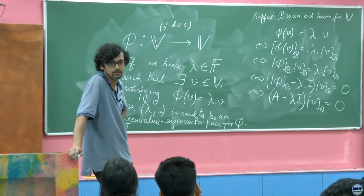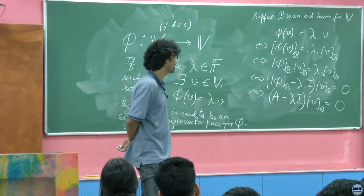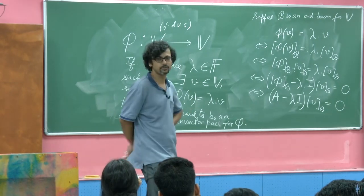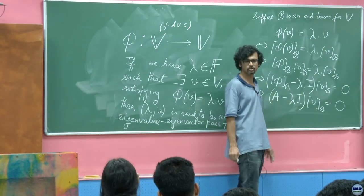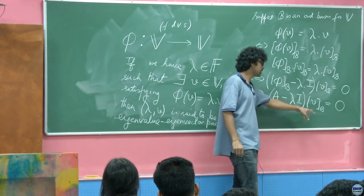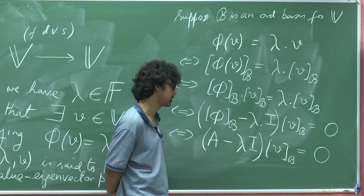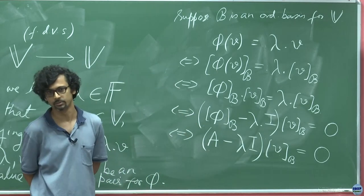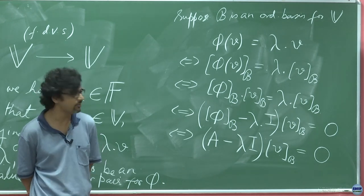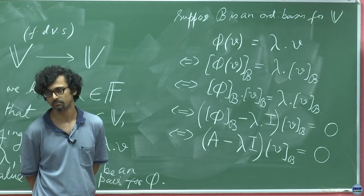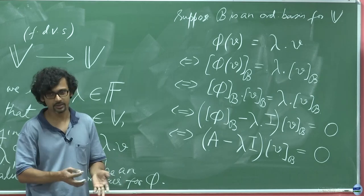There are many possibilities for lambda. You want a non-trivial kernel — you want A minus lambda I to lose rank, to have something in the kernel. V equals zero is obviously going to be in the kernel of everything, whether invertible or not, but we want a non-trivial solution.